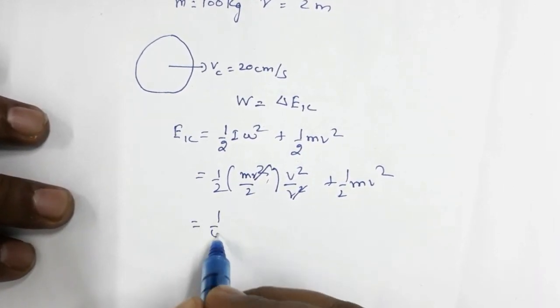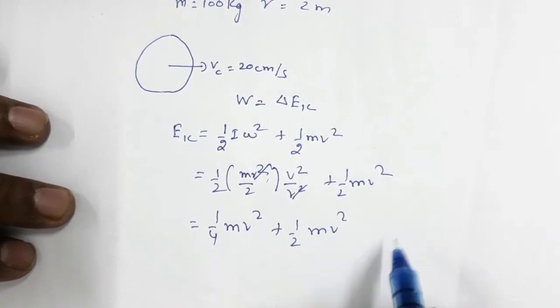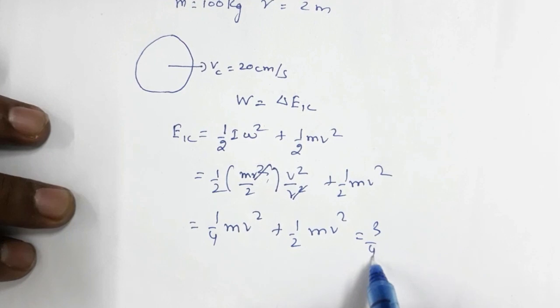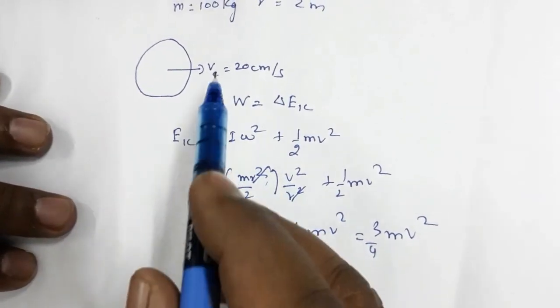So this is one by four mv squared plus one by two mv squared, which equals three by four mv squared. Here m is the mass and v is the velocity of the center of mass.